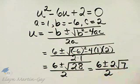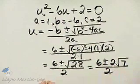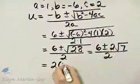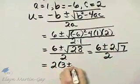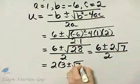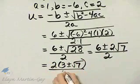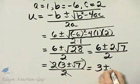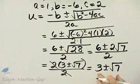Then I need to take a couple of steps to finish. I'll factor out a 2 there, that's 2, and then I have 3 plus or minus square root of 7. There are my two solutions.